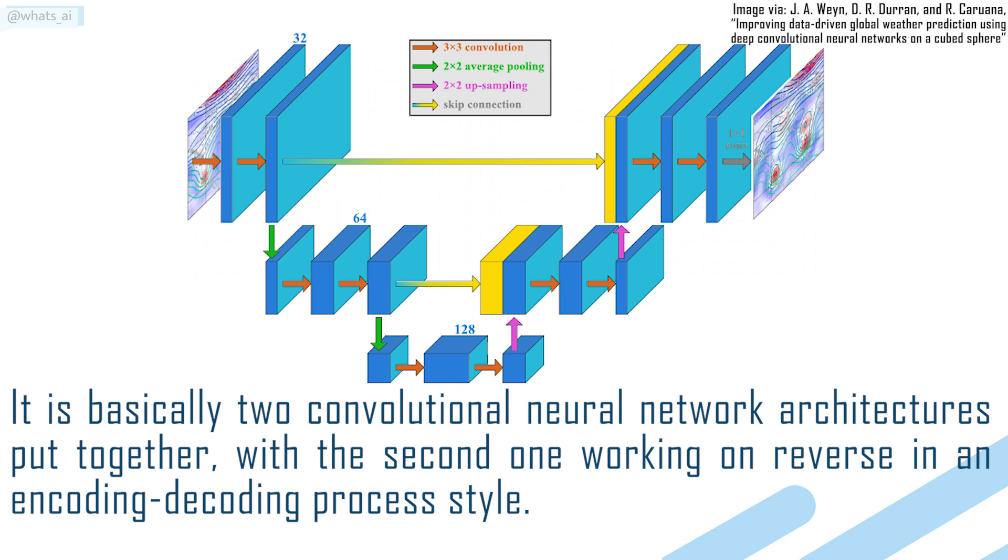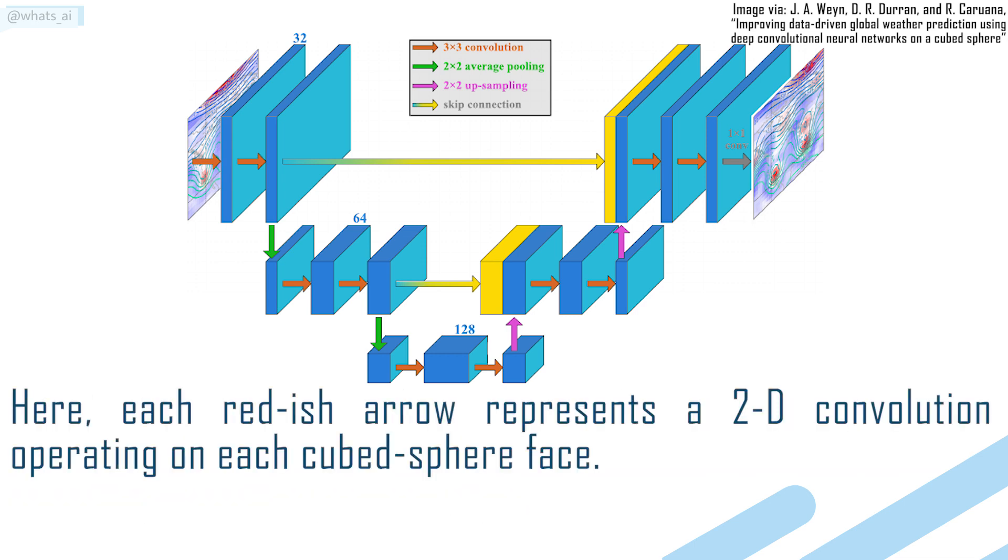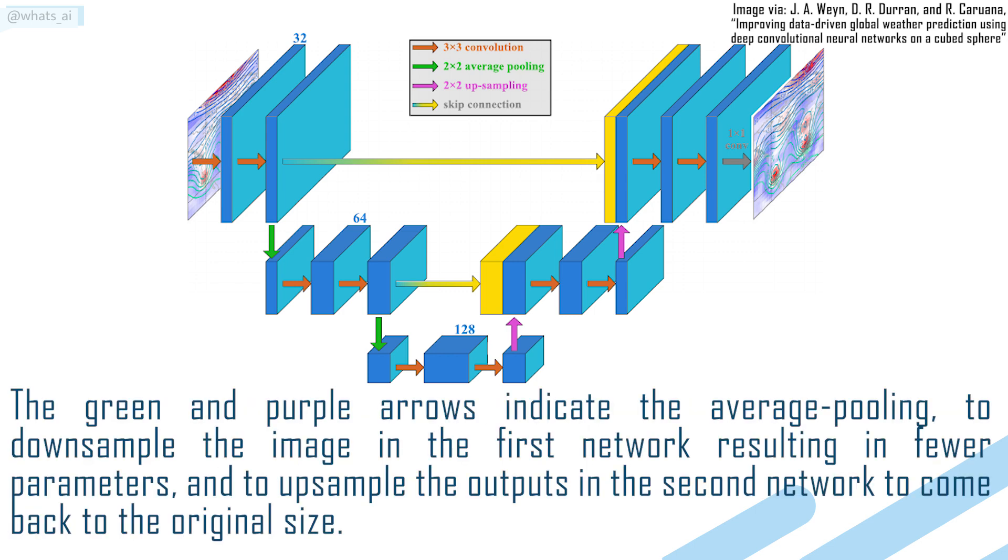Here, each reddish arrow represents a 2D convolution operating on each cubed sphere face. The green and purple arrows indicate the average pooling to downsample the image in the first network resulting in fewer parameters, and to upsample the outputs in the second network to come back to the original size.